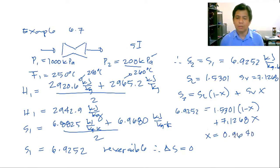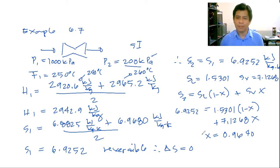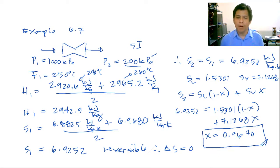So the answer to the question about the downstream state is: X = 0.9640. Since the quality is less than 1, part of the steam has condensed into liquid. This state is called wet steam.